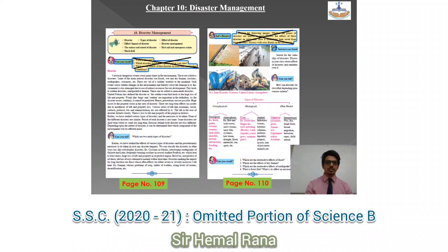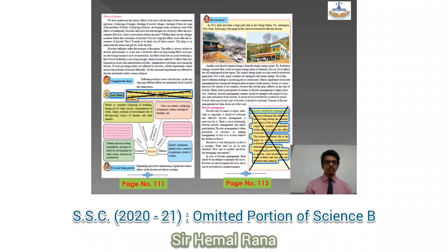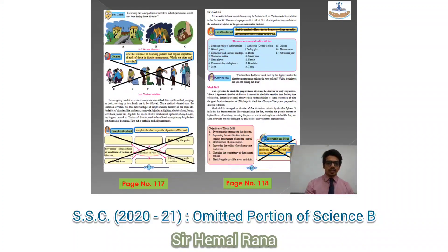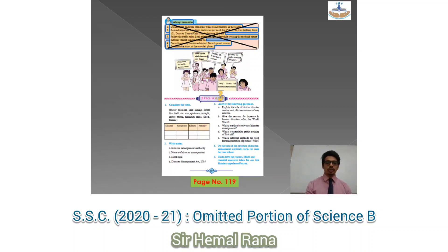Coming to the last chapter, Disaster Management: 'Can You Recall' on page 109 has been removed, and on page 110 you do not have 'Let's Discuss.' On page 111 you do not have 'Let's Think,' and on page 112 the objectives of disaster management block has been deleted. On page 115, 'Try This' and the entire flow chart for disaster management authorities have been removed. On pages 116-118, 'Internet My Friend,' 'Who Does What,' 'Complete the Following Chart,' and the observation diagram have all been deleted. On page 119, 'Always Remember' has also been deleted.